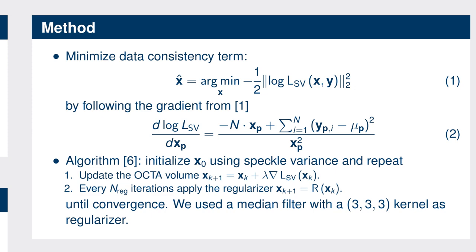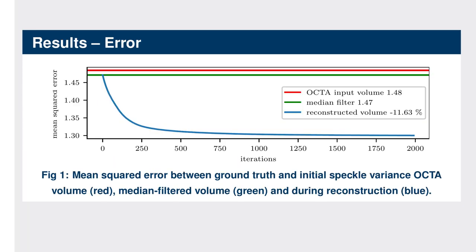We can find out whether our reconstruction converged by computing the mean squared error between the initialization and the current reconstruction. If the error does not change anymore, the reconstruction has converged. We did not calculate the error between the ground truth and the reconstruction from the volumes, but from en-face projections instead. We segmented the retinal pigment epithelium and the inner fiber layer, then projected the retinal space in between using 90th percentile projection to obtain en-face projections of the retinal vasculature. These projections were used for computing the mean squared error.